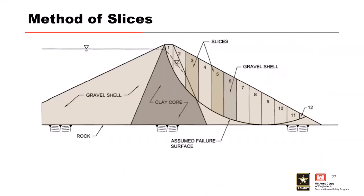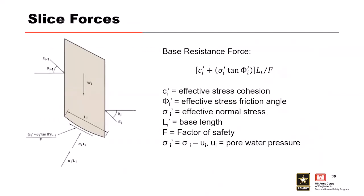In limit equilibrium methods, the soil above the shear surface is split into vertical slices. The overall number of slices depends on the analysis method and cross-section geometry. Forces and moments on each slice include the weight of the slice acting downward, a normal force acting upward, a shear force at the bottom, and side forces on either side—at the same or different angles depending upon the selected method.